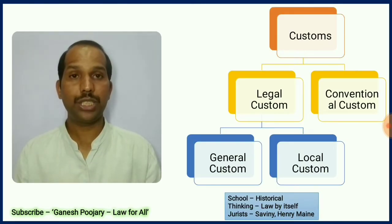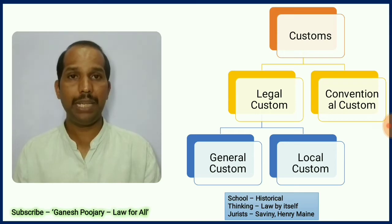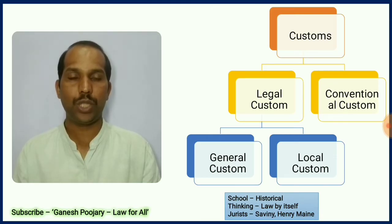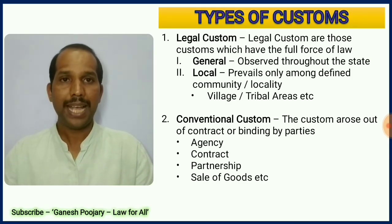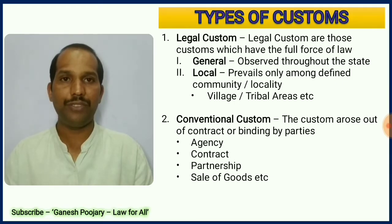Jurists from the historical school of jurisprudence considered custom as the major source of law. They say customs are law by themselves — major jurists include Savigny, Henry Maine, etc. There are two major types of customs: legal customs and conventional customs. Under legal customs, we have general customs, applicable for the entire state, and local customs, applicable for a particular village, community, or tribe. Conventional customs are those that arise out of contract or are binding on parties — examples include agency, contract, partnership, and sale of goods.